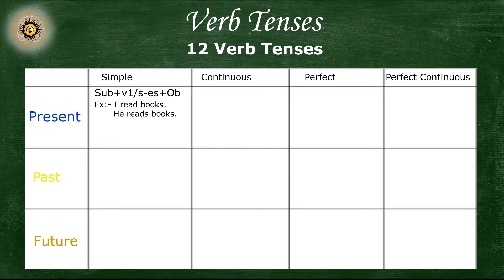The helping verbs that we use in simple present tense are: do, does, is, am, are, has, have. Now, past simple tense — the sentence structure for this tense is: subject plus second or the past form of the verb plus object.